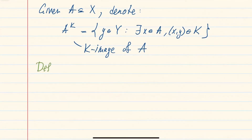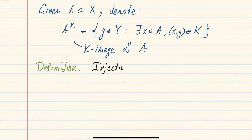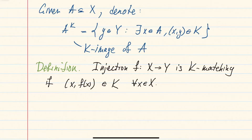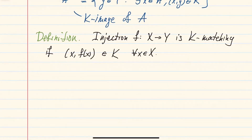A K-matching of X and Y is defined as follows: an injection F from X to Y is called a K-matching if the graph of this function — every point (x, F(x)) — belongs to the set K for all x in X.